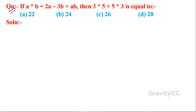Question: if a asterisk b is equal to 2a minus 3b plus ab, then 3 asterisk 5 plus 5 asterisk 3 is equal to? In this question, given a asterisk b is equal to 2a minus 3b plus ab.